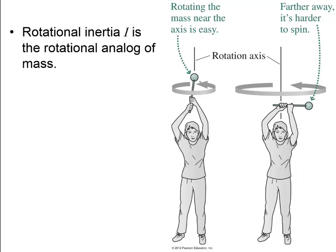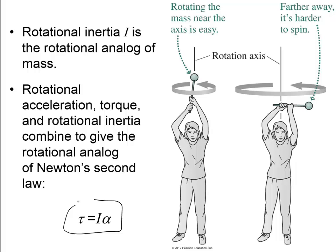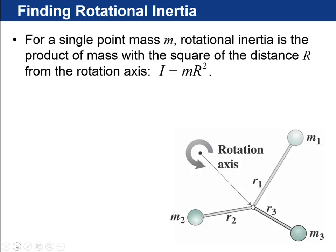Rotating a baton around its own axis is easy because all the mass is near the axis; turn it on its side and it's harder to spin up. The key equation is: net torque equals rotational inertia times alpha (τ_net = Iα). This is the rotational analog of F_net = ma, where torque is analogous to force, rotational inertia to mass, and alpha to linear acceleration. The rotational inertia of a single particle of mass m at distance R from the axis is m times R squared.